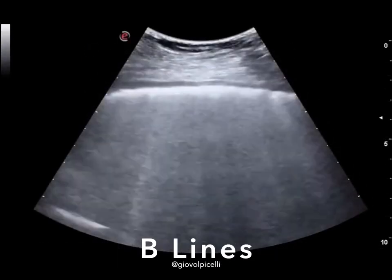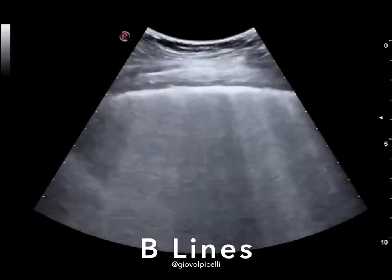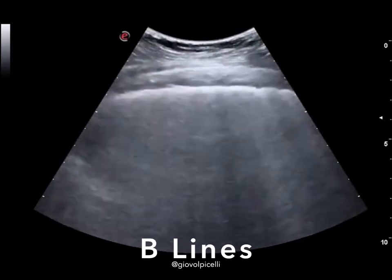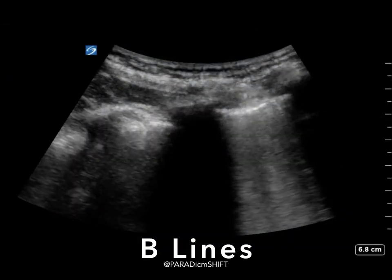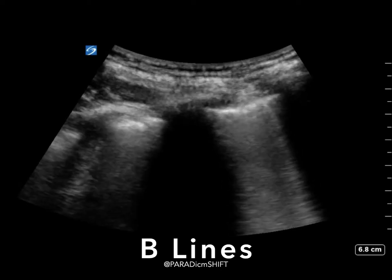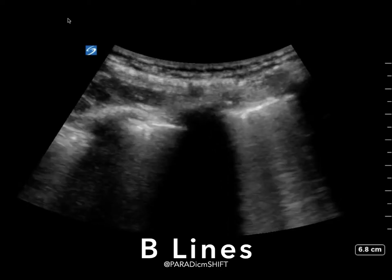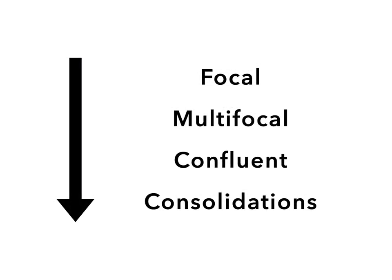Patients can also develop B lines, as these two examples demonstrate. B lines can take on many different appearances depending on the progression of disease. They can appear focally, they can be multifocal — often with spared areas in between called skip lesions — and they can become confluent. The theory is that with further progression, confluent B lines can develop into frank consolidations.